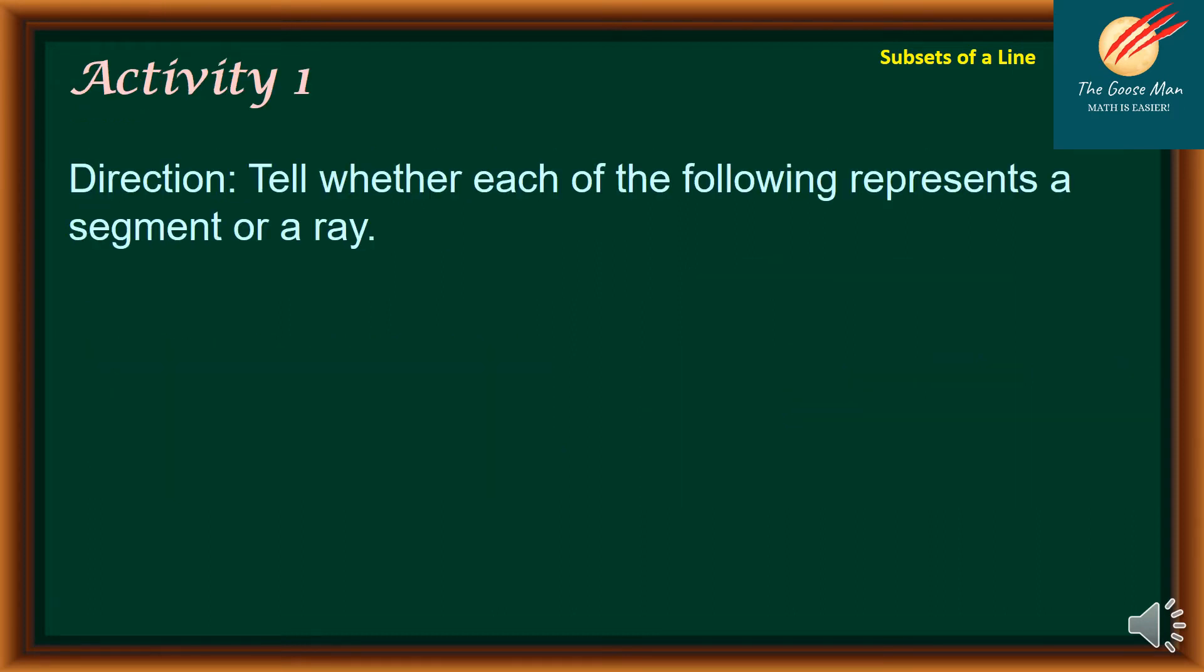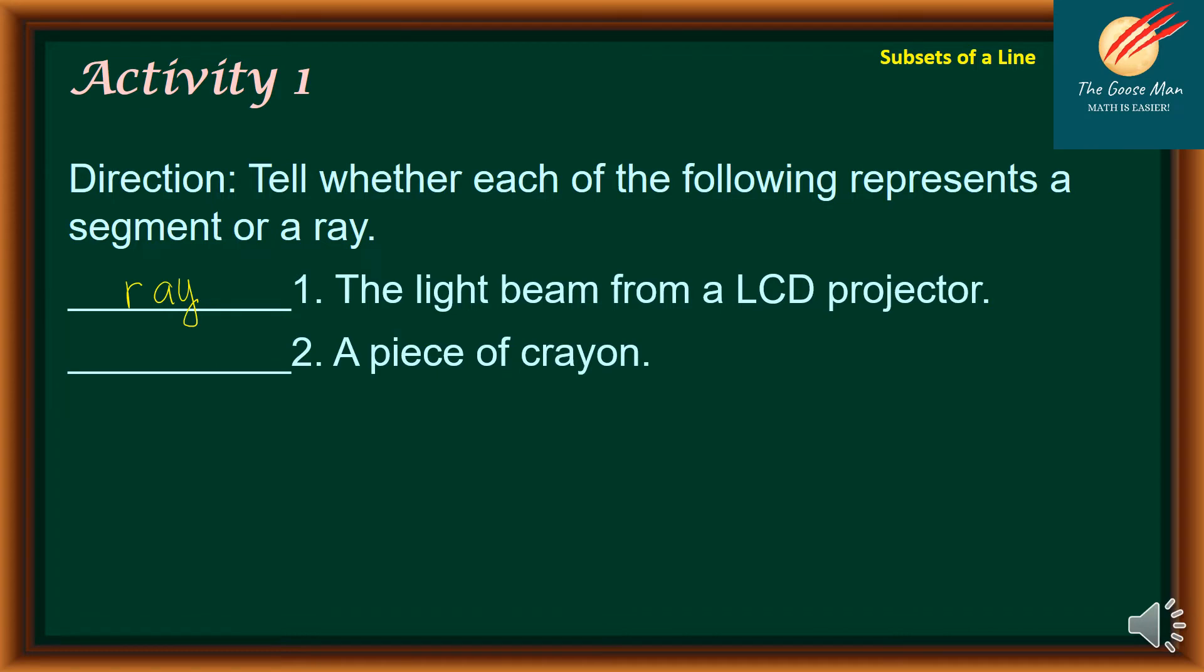Let's have our activity number one. The direction is tell whether each of the following represents a segment or a ray. Let's consider number one, the light beam from an LCD projector. This is actually a ray. Number two, a piece of crayon. Crayon has a definite length, so we have actually a segment.